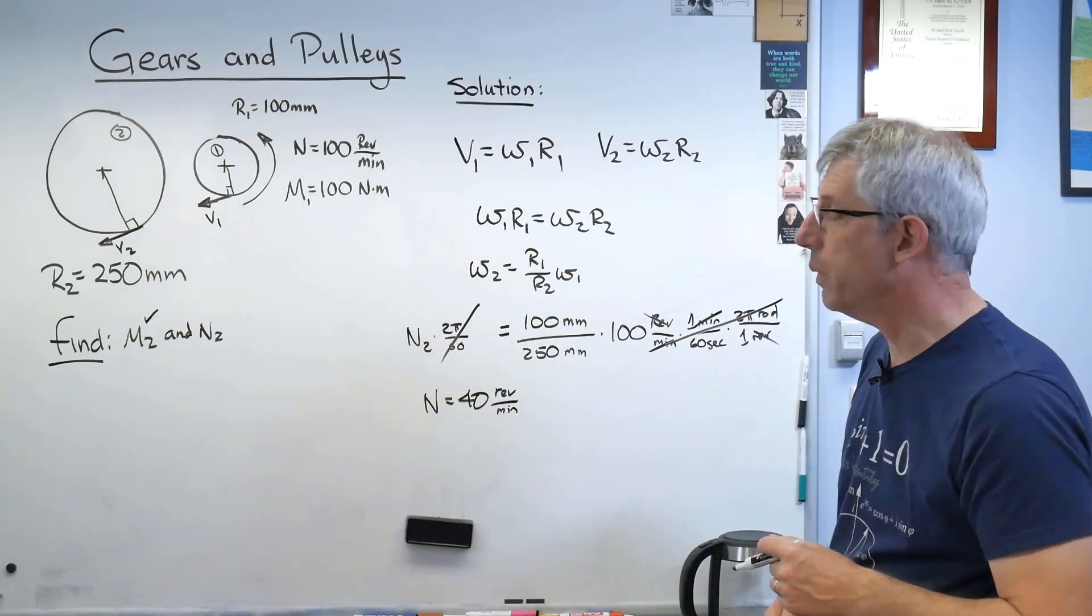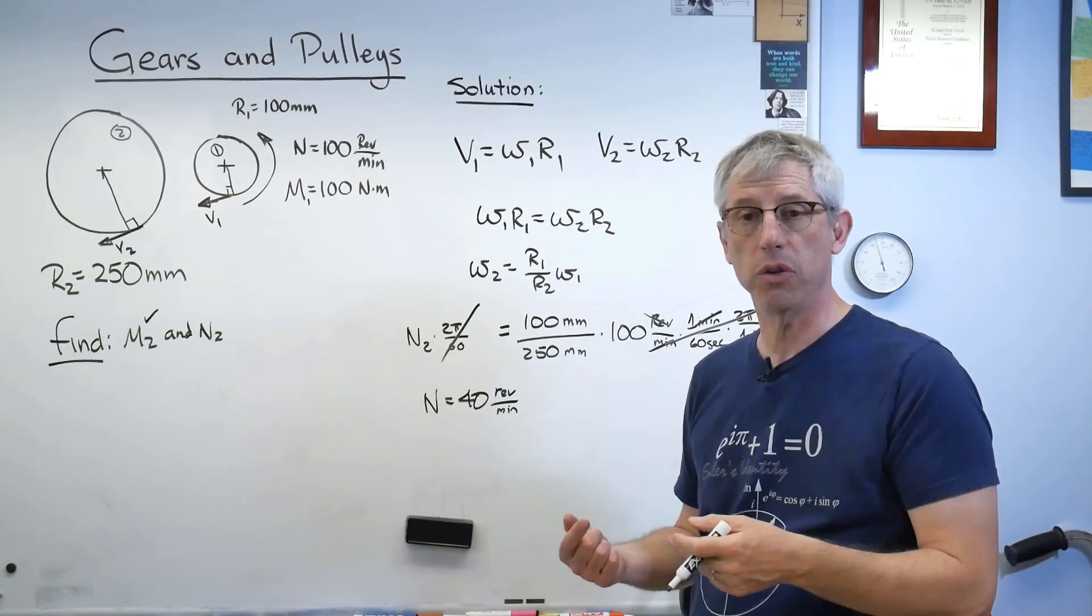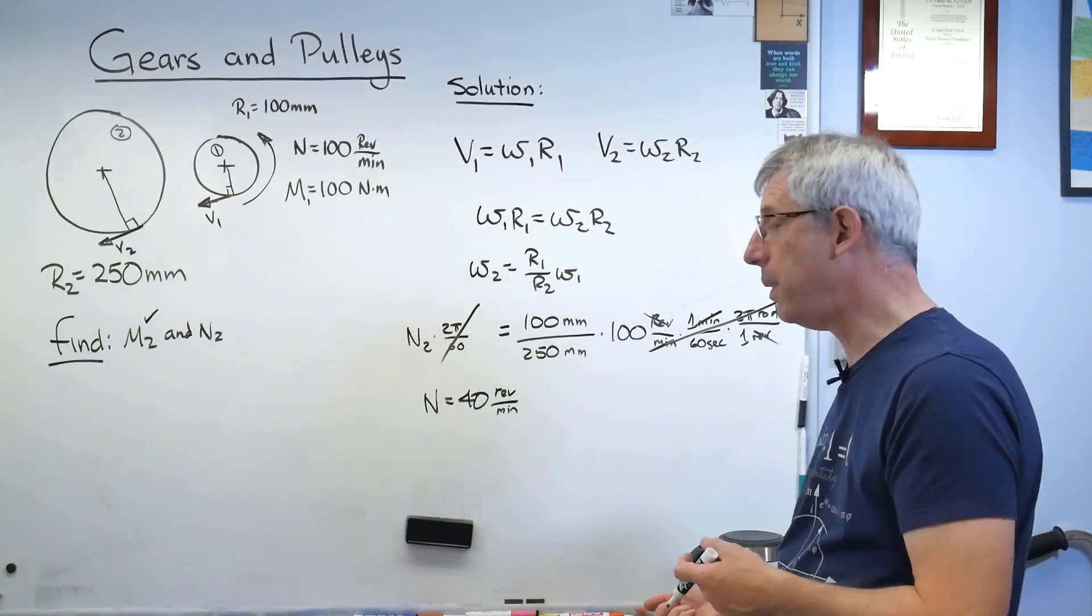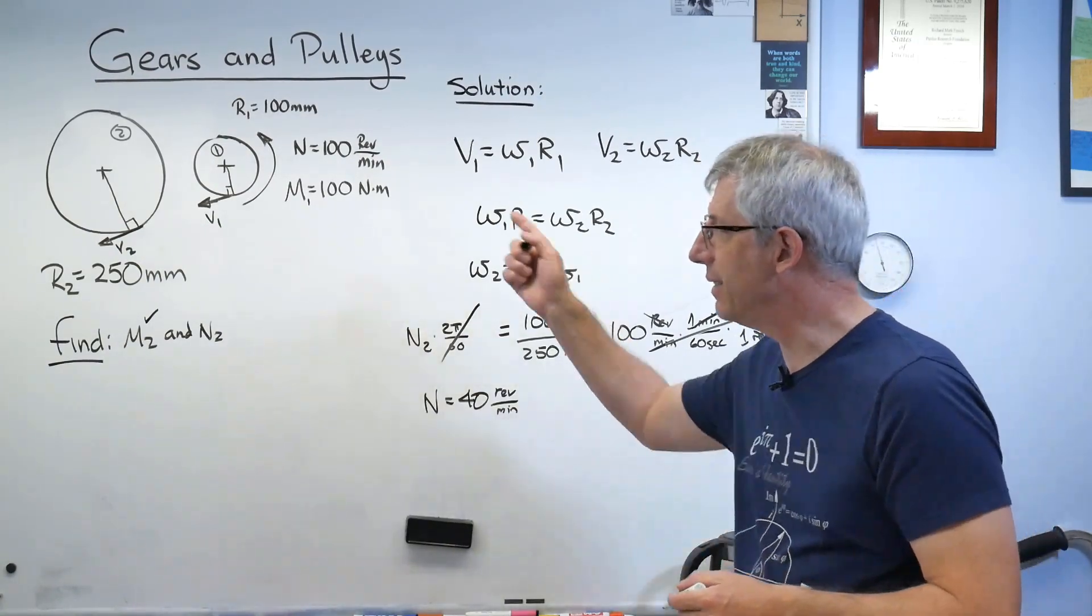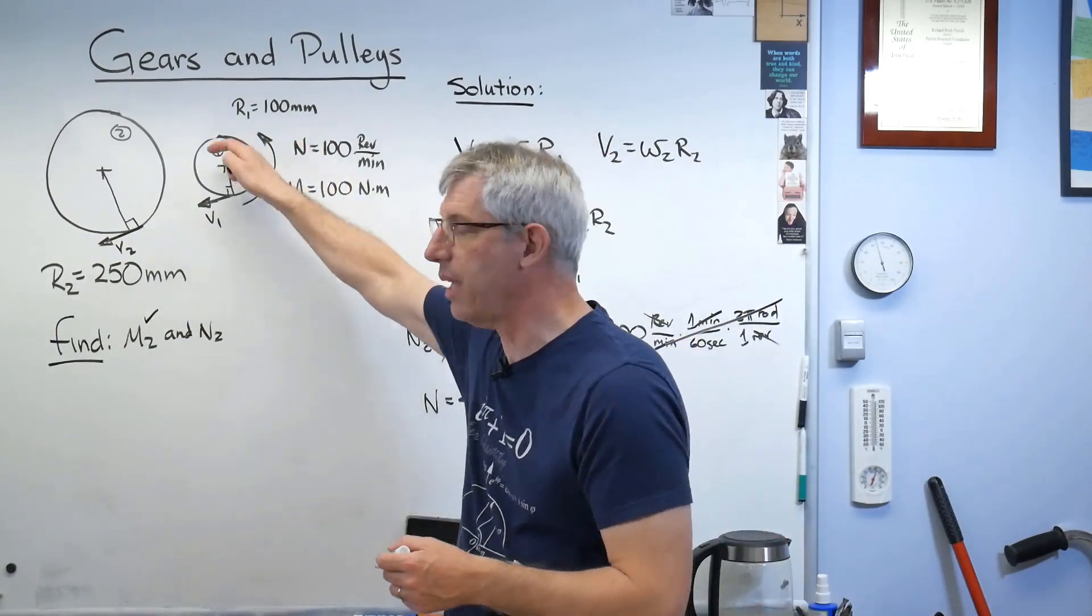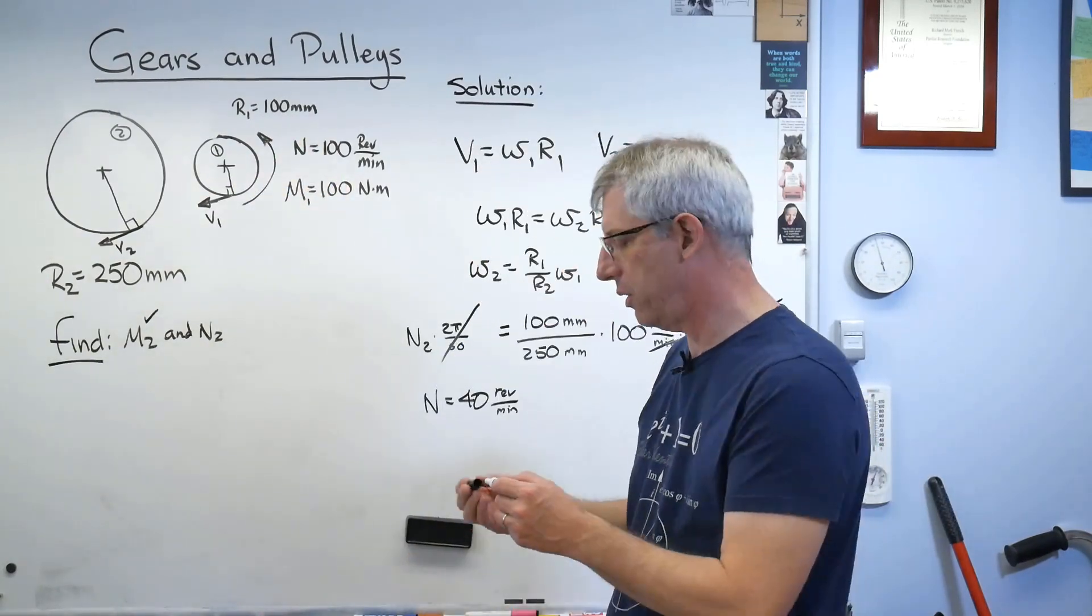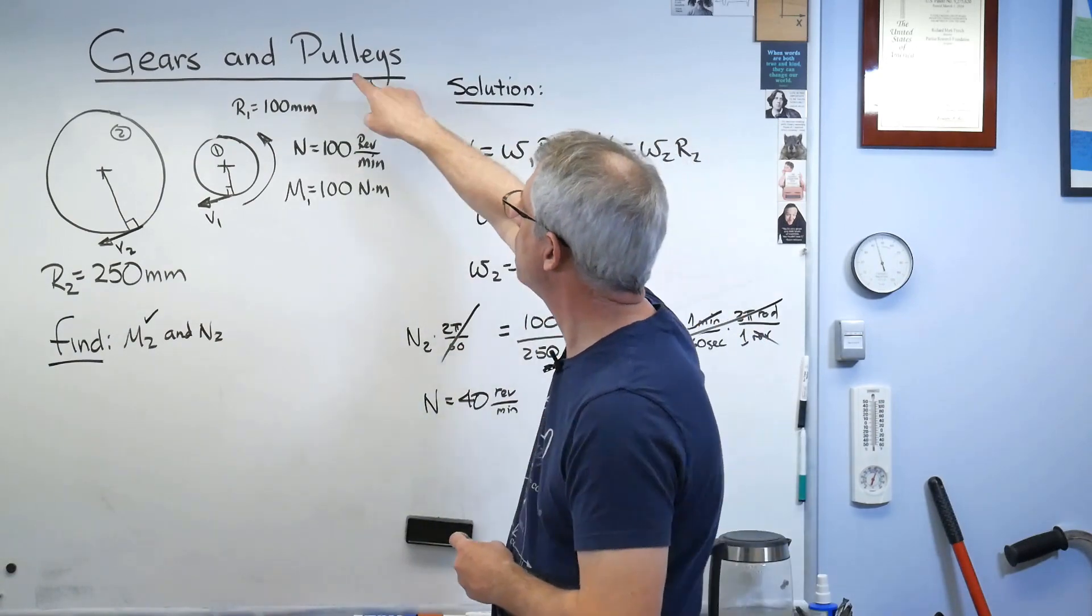All right, so we got a 2 and a half times increase in moment and a 2 and a half times decrease in speed. Okay, like I said, this isn't magic. This thing here doesn't get to make energy. It just transmits it. So this is the pulley part. I mentioned gears. Where's that? Well, let's fix that too.